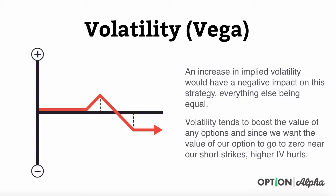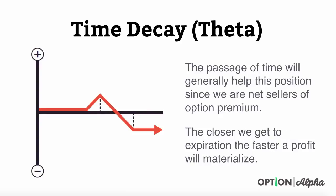Volatility increasing will generally have a negative impact on the strategy. Because we are selling options, we want to see implied volatility go down. If implied volatility goes up, it's going to hurt our short strikes which are very close to where the stock is trading right now. The passage of time or theta decay really helps this position because we're net sellers of option premium. We're selling two of those options out of the money. The closer we get to expiration, the faster this profit will start to materialize. Time decay is our friend in this case.